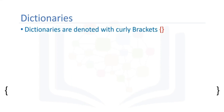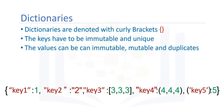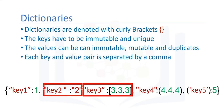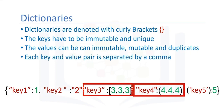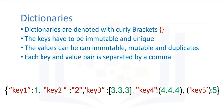To create a dictionary, we use curly brackets. The keys are the first elements; they must be immutable and unique. Each key is followed by a value separated by a colon. The values can be immutable, mutable, and duplicates. Each key and value pair is separated by a comma.